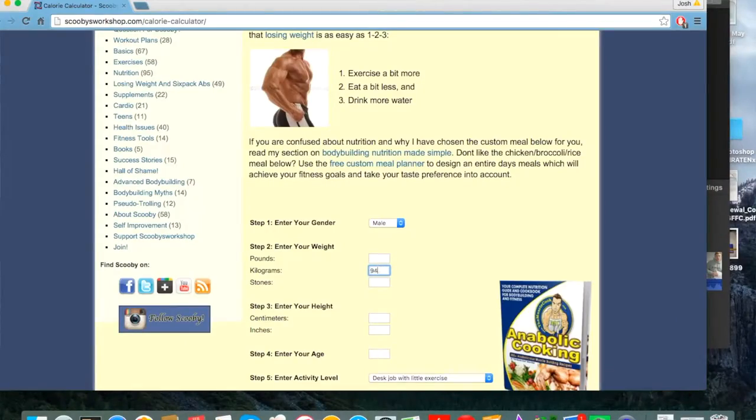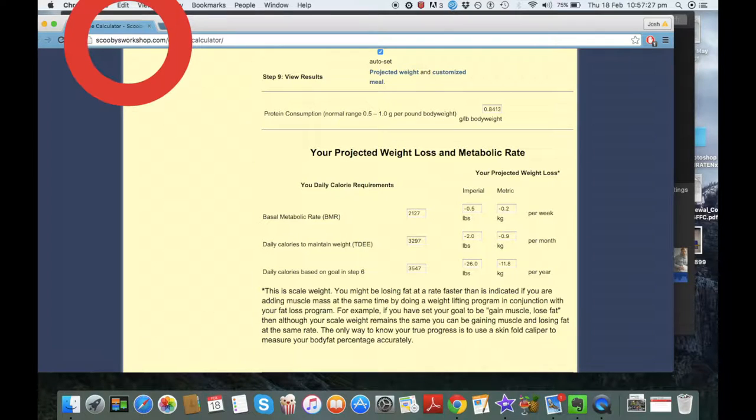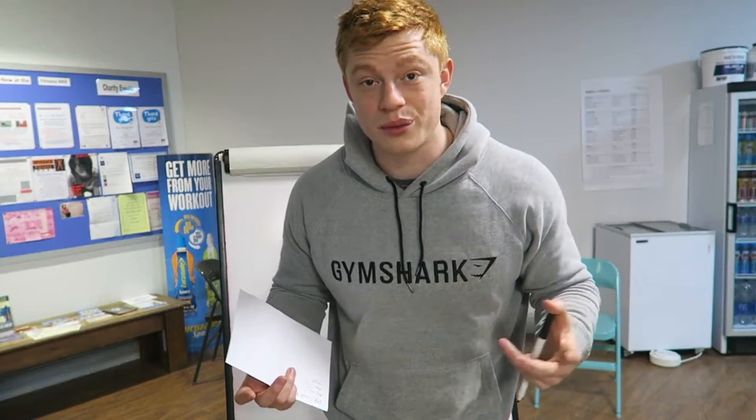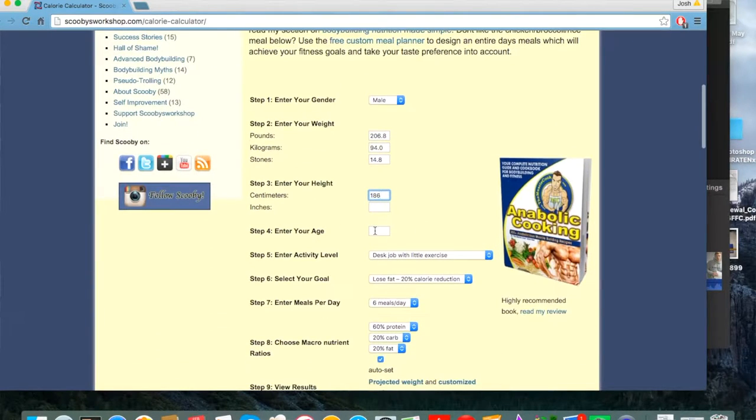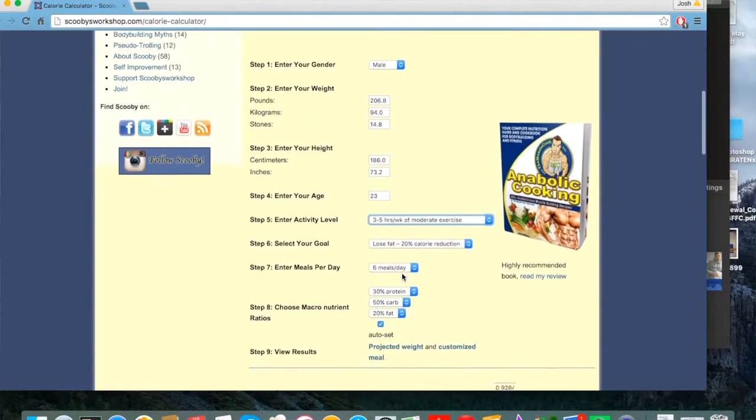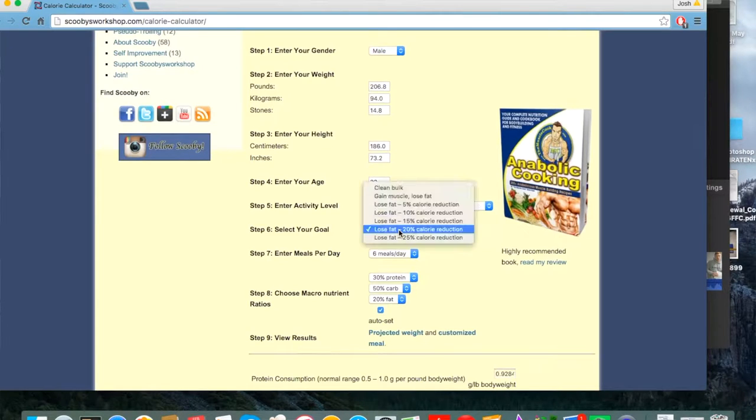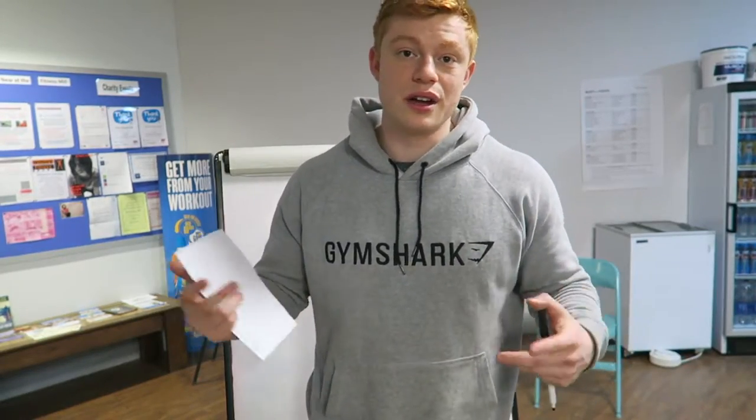This is how I work it out: go to this website, Scooby's, he's a very good YouTuber I've followed for a long time. This is how I originally found out my calories. Type in all your information - it's the easiest way to do it. Height, weight, age, all of these things affect the amount of calories we need. Activity level as well. If I'm a rugby player training four or five times a week, I'll need a lot more calories to maintain my body weight than someone who sits at an office desk all day.